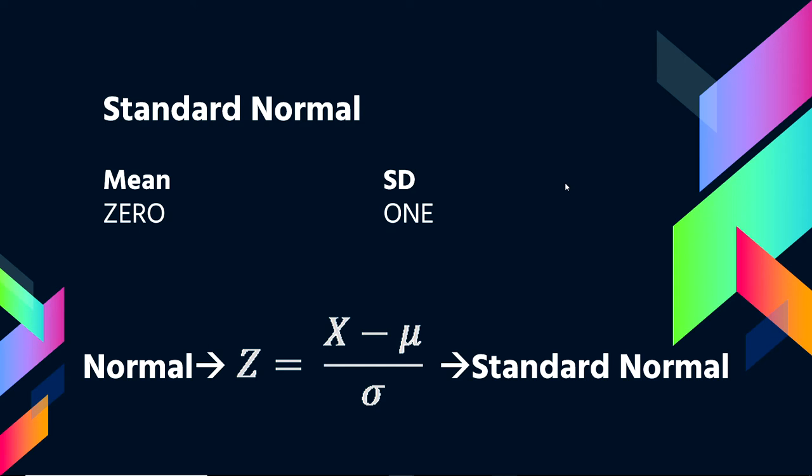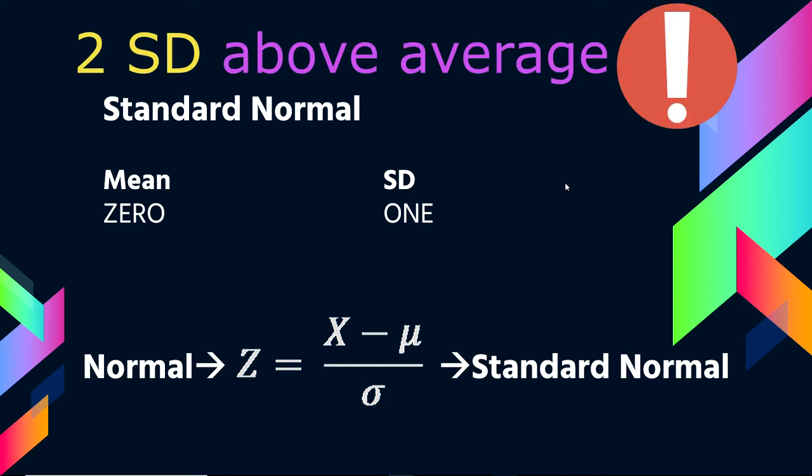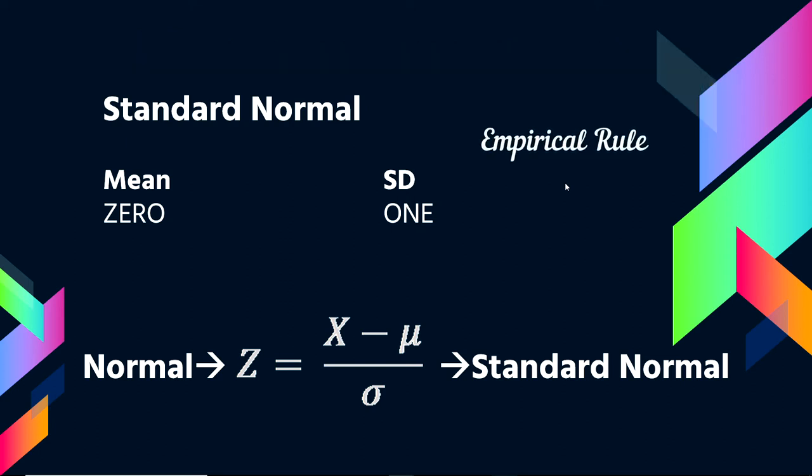And so now, if you know about this normal distribution, you can say, oh, two standard deviations above average, that's high. We learned the empirical rule briefly previously. So this allows us to just get some more specific values. I have a bunch of follow-up videos that go through more about the specific values, more about the calculations, how to do them in Excel, and how to make sense of them.